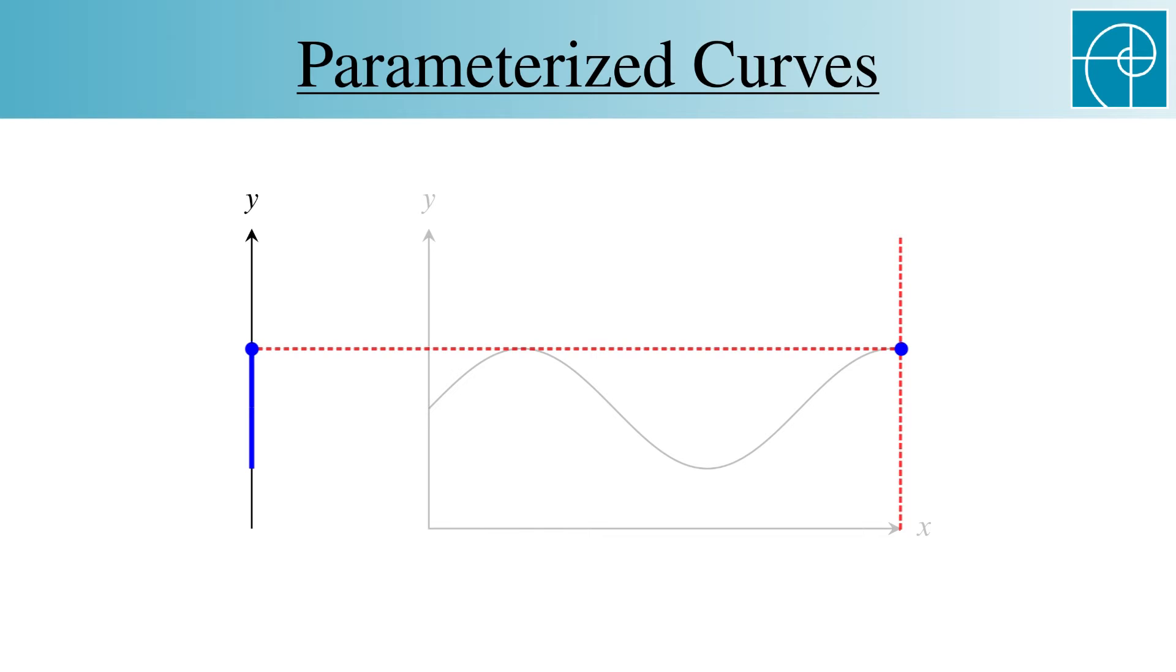With a function whose co-domain is one-dimensional, for example a line, this isn't too exciting. But we can do the same with a function whose co-domain is two-dimensional.